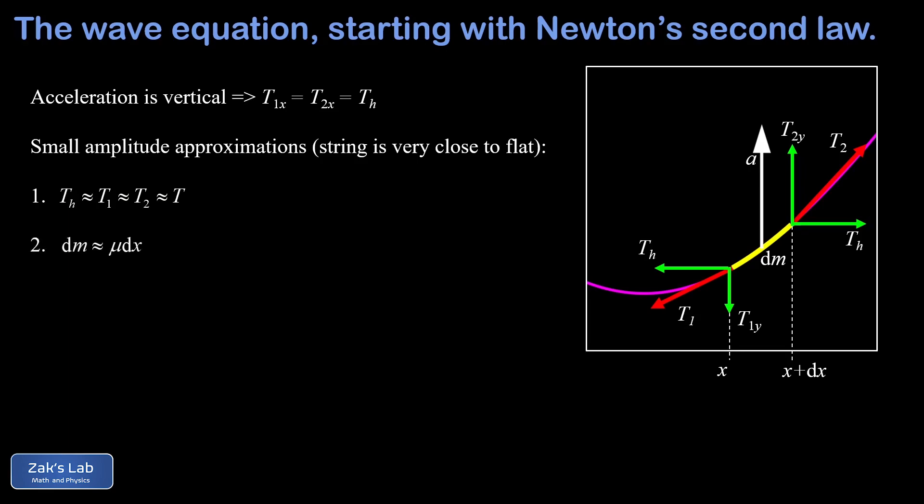Our second small amplitude approximation is that the mass of the small chunk dm can be computed by taking the linear density μ and multiplying by dx. Since linear density is mass per unit length, multiplying by length gives mass. We're saying the length of dm is approximately just dx — the horizontal displacement across the increment — because the string is so flat that dm is nearly horizontal at all times, so its length is well approximated by dx.